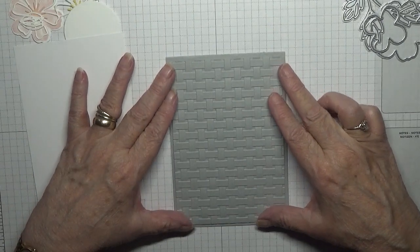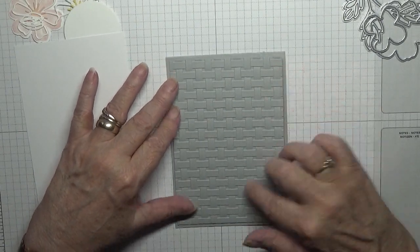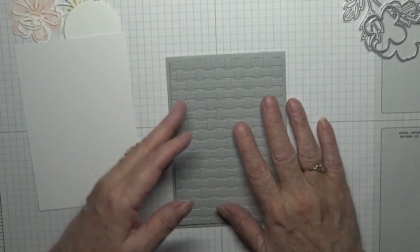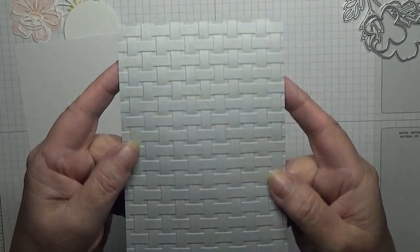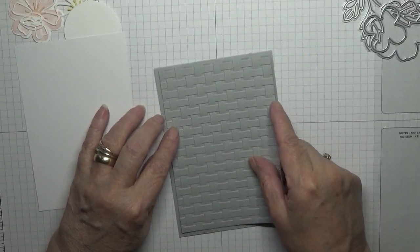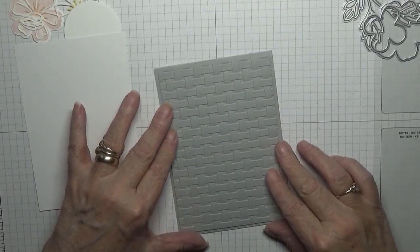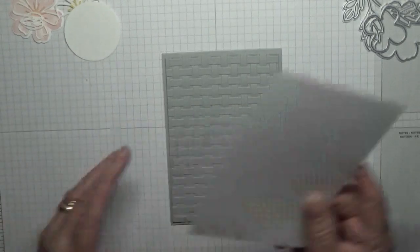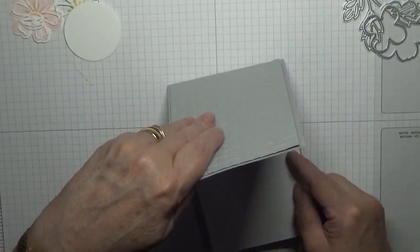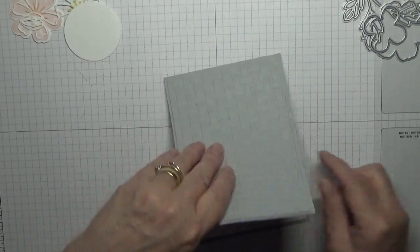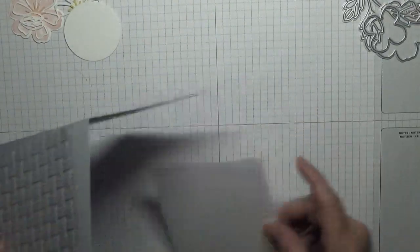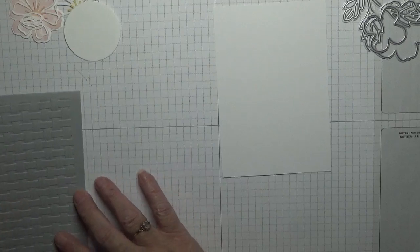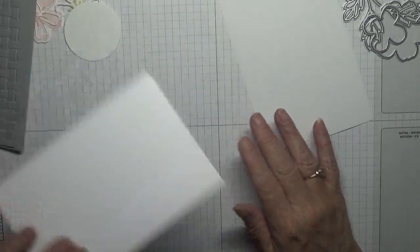I have a piece of smoky slate at five and five-eighths by three and seven-eighths, and I've already run it through the basket weave embossing folder. I've got a piece of white for the inside at five and five-eighths by three and seven-eighths, and a scrap of white for the flowers.